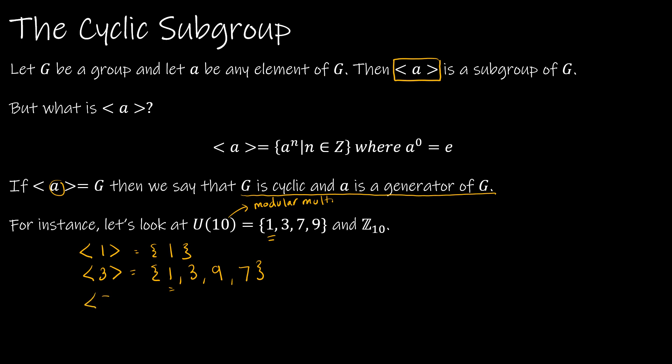Well, what about 7? Because a group can be generated by more than one element. Looking at 7, I have 7 to the zero, 7 to the first, 7 squared is 49 which is just 9, 7 to the third is 243 which is 3, and we would end up back at 1. So 7 does generate every element of the set.